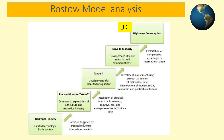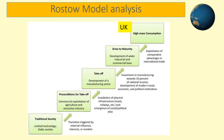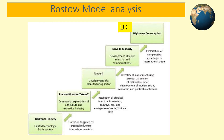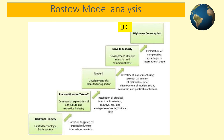The Rostow model is shown on the screen. It tries to break down all global nations' development into five categories. The idea is that all countries will develop in the same way, going through each stage of development over time — from a traditional society right up to a highly developed high mass consumption society. The UK is an example of this, being one of the richest nations in the world. The DRC is however nowhere near as developed as the UK, and we will look more closely at the model to see where we think it should fit.